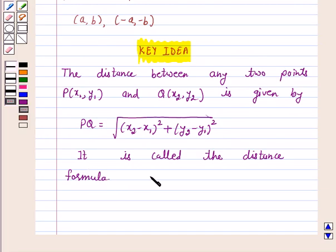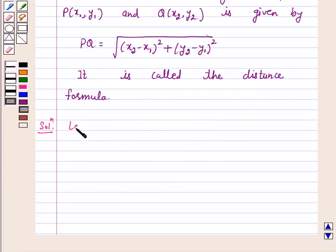We will take the help of this distance formula to solve the question. Let P(a,b) and Q(-a,-b) be the given points.